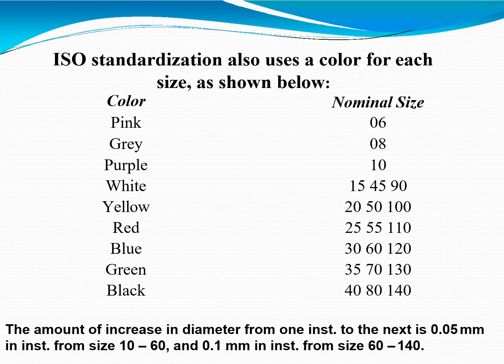ISO standardization also uses a color code for each size: pink 06, gray 08, purple 10, white 15/45/90, yellow 20/50/100, red 25/55/110, blue 30/60/120, green 35/70/130, black 40/80/140. The increase in diameter from one instrument to the next is 0.05 mm for instruments from size 10 to 60, and 0.1 mm for instruments from size 60 to 140.